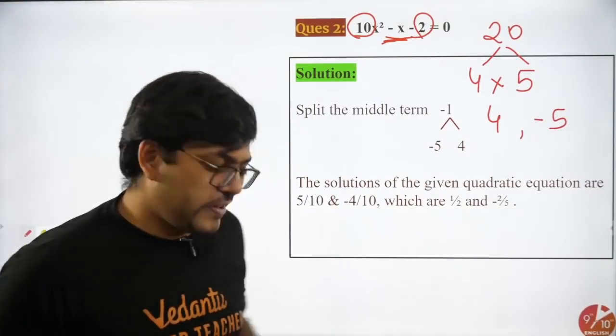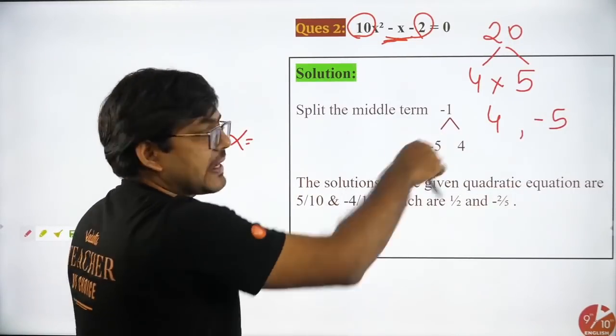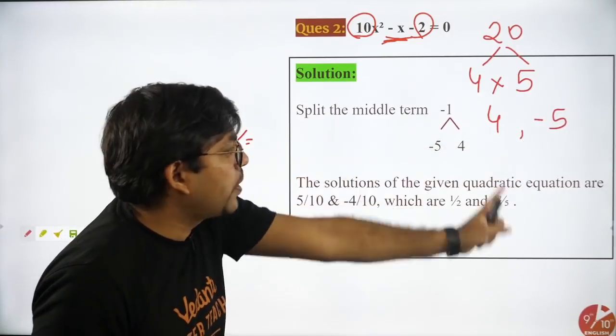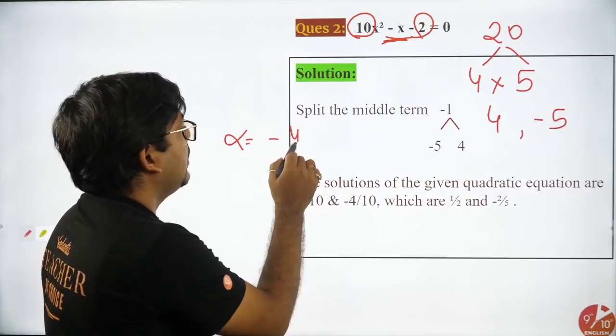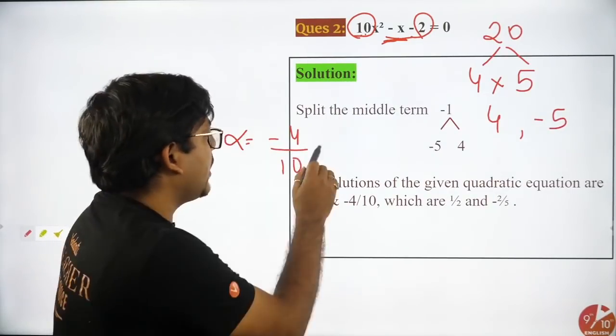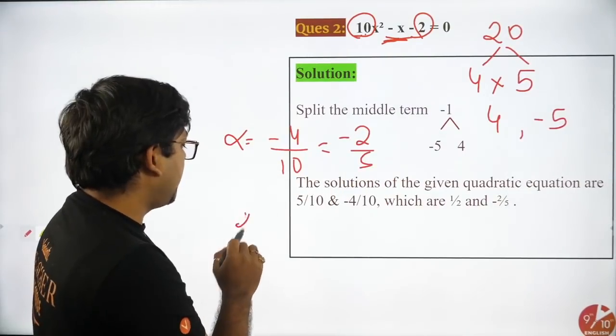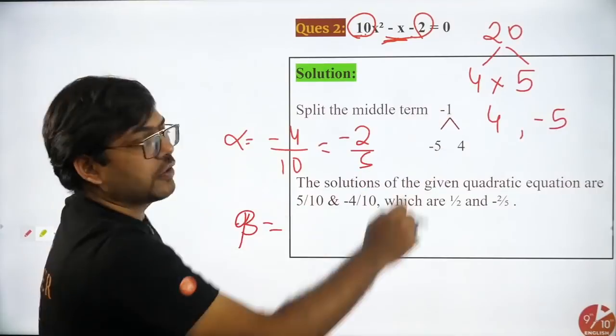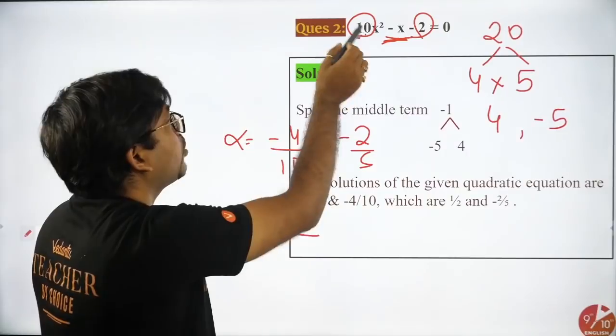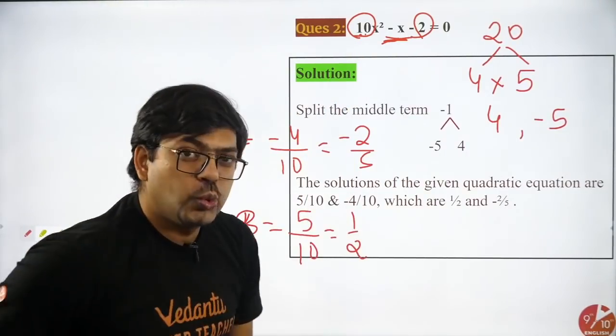Now your zero would be what? So absolutely simple. Alpha, the first zero will be opposite sign of the root. Means opposite sign of this middle term splitting. So four, you will do opposite sign. That is minus four. Divided by coefficient of x², minus four by 10. That is precisely minus two by five. And the second zero, beta, again opposite sign of the number. So minus five is here. Opposite sign, plus five. And then divided by the coefficient of x². That is ten. So five by ten, answer is one by two.